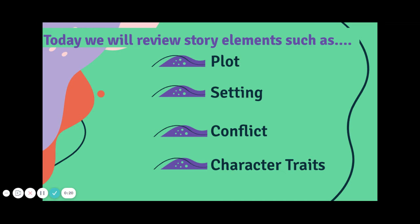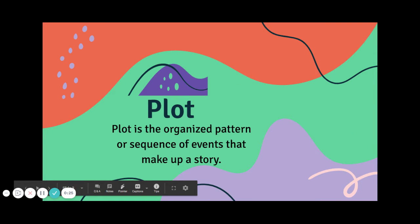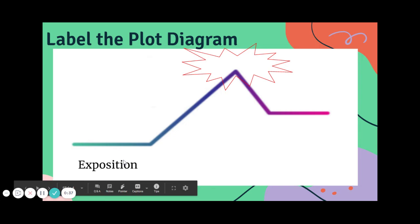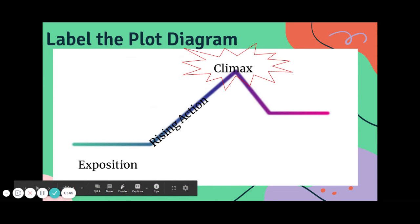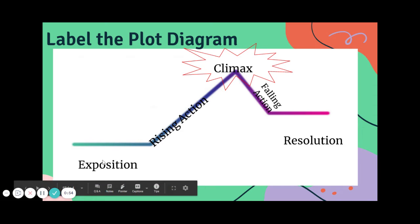Today we will review the story elements like plot, setting, conflict, and character traits. Starting with plot — the most difficult one. Remember, these are just the sequence of events that make up a story. We like to put them on a plot diagram. So say it with me now: first we have our exposition, where we meet our characters, our setting, and our main conflict. Then everything starts getting good — we've got our rising action. Up at the top we've got our climax, then our falling action, and our resolution, where we find out what happens.